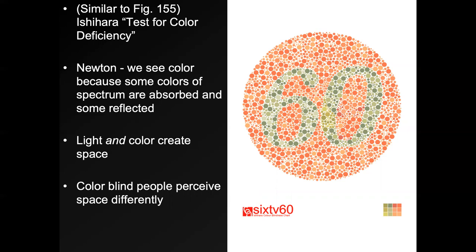Light and color create space, meaning most of the time when you're making art with light and color, you're working in two-dimensional works — so light and color can create the illusion of three dimensions. Colorblind people, as a result, perceive space slightly differently when they look at the real world. And that's the same with animals who don't see the same span of colors that we see.